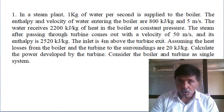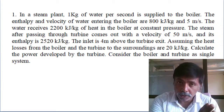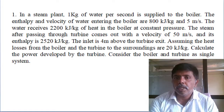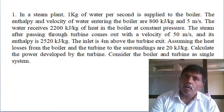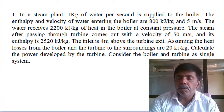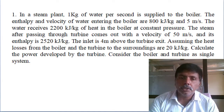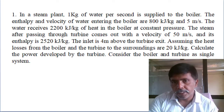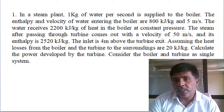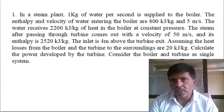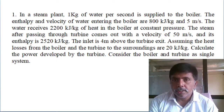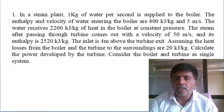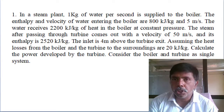The boiler exit conditions are not provided. At the turbine exit, the velocity of steam is 50 meters per second and its enthalpy is 2500 kilo joules per kg. The inlet is 4 meters above the turbine exit. Assuming the heat loss from the boiler and turbine to the surroundings is 20 kilo joules per kg.